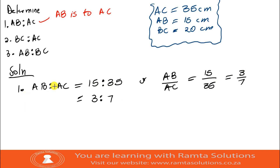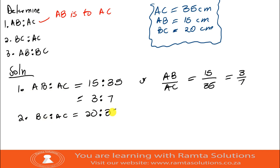Number two: BC is to AC. BC is 20 centimeters and AC is 35 centimeters. The highest common factor is still 5, so 20 over 35 gives 4 over 7. The ratio BC : AC = 4 : 7.